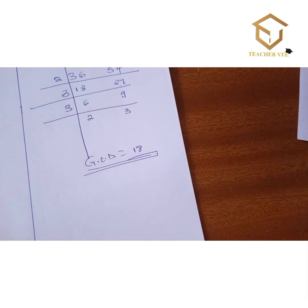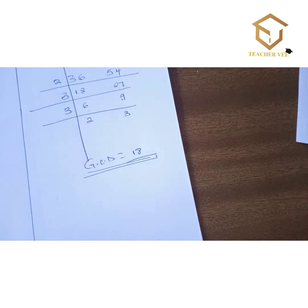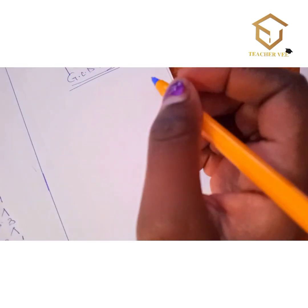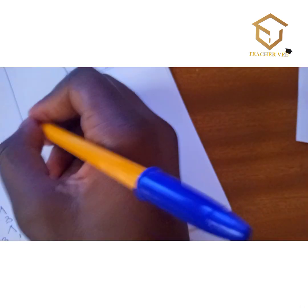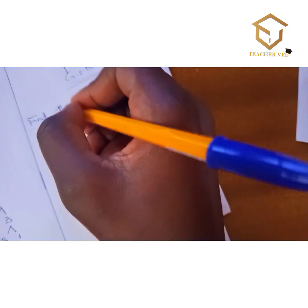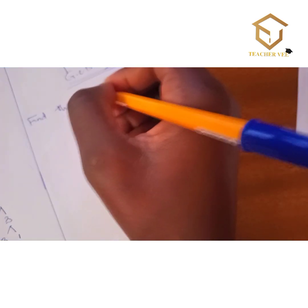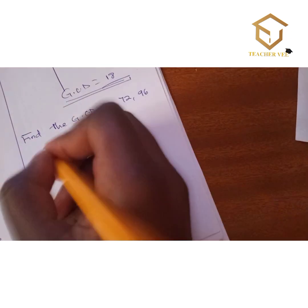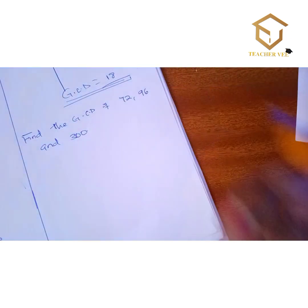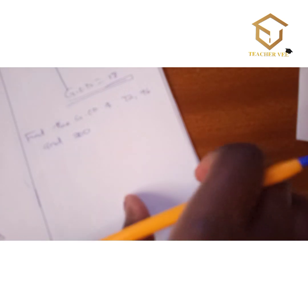That brings us to the end of today's lesson. Before I go, here is your assignment: find the GCD of 72, 96, and 300. Let's meet in the next video. Please subscribe, like, and share with your friends — let everyone know that mathematics is not hard. Thank you, bye bye!